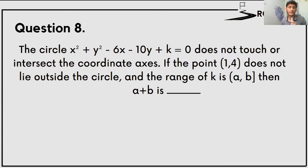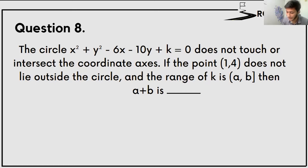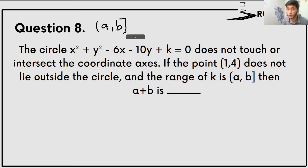The question is: the circle x² plus y² minus 6x minus 10y plus k equals 0 does not touch or intersect the coordinate axis. If the point (1,4) does not lie outside this circle and the range of k is (a, b), then find a plus b. Note: b is a closed interval and a is an open interval — meaning a is not included but b is.